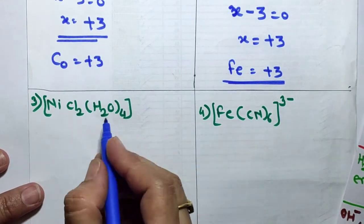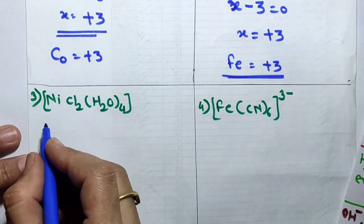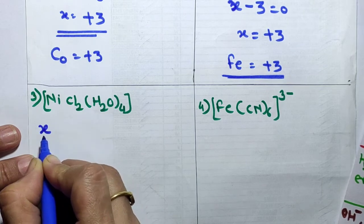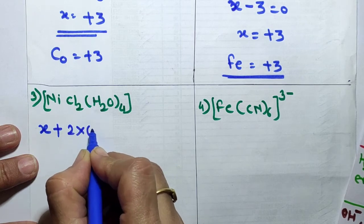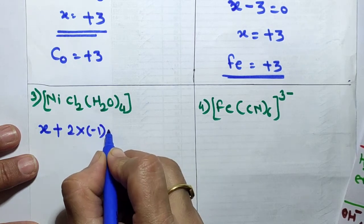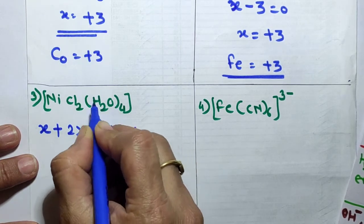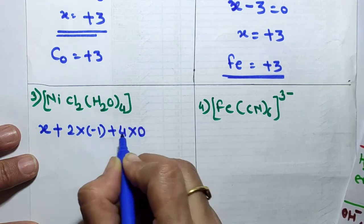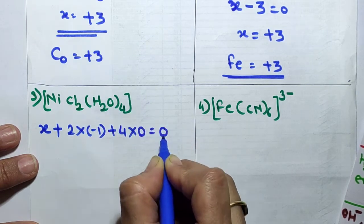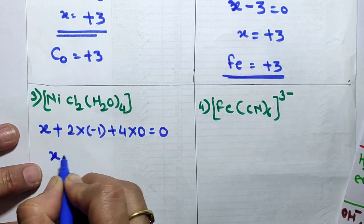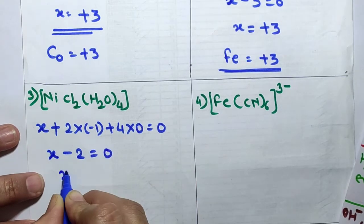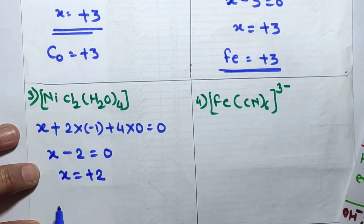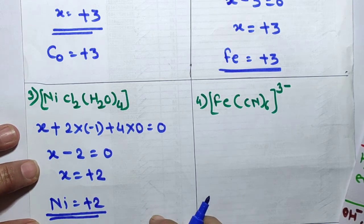Third example: [NiCl2(H2O)4]. Nickel is the central metal. Oxidation state of Ni is X: X + 2×(−1) + 4×(0) = 0. That is X − 2 = 0, therefore X = +2. Nickel has oxidation state +2 in this complex.